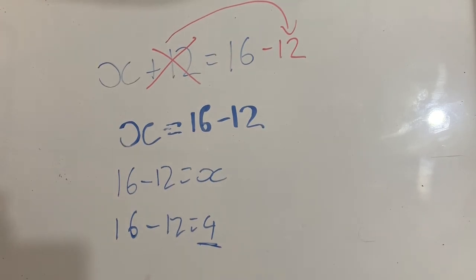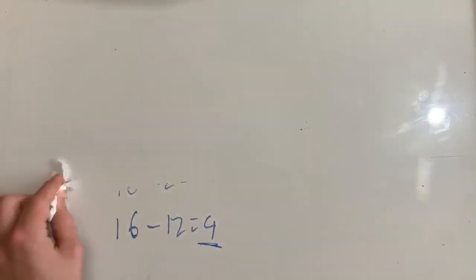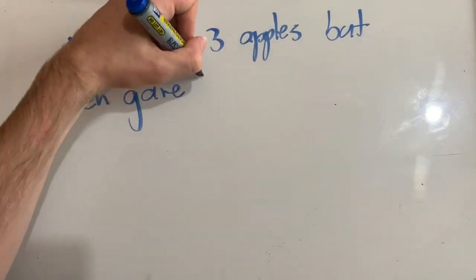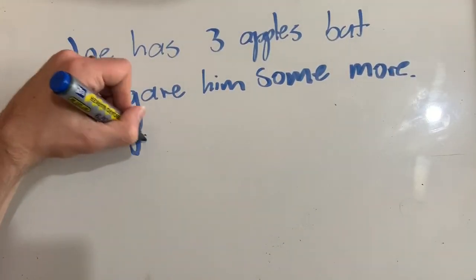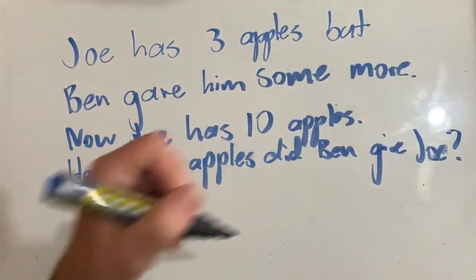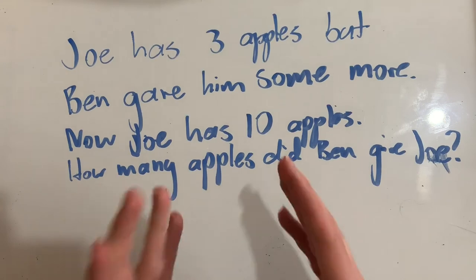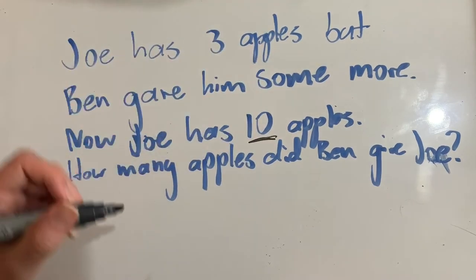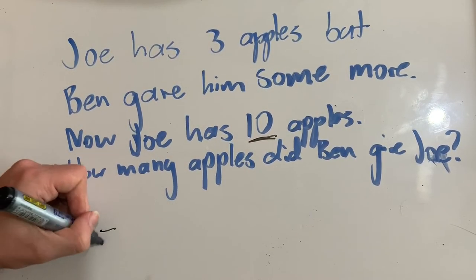Let's use this in a worded problem. Joe has three apples, but Ben gave him some more. Now Joe has 10 apples. How many apples did Ben give Joe? Now I know how many apples that Joe ended up with, and I know how many he started with. And I want to know how many were added during that time. Now I can write that like this. So I know how many he's got at the end. So he's got 10 at the end. So equals 10. That's 10 on one side. At the end of it, he ends up with 10.